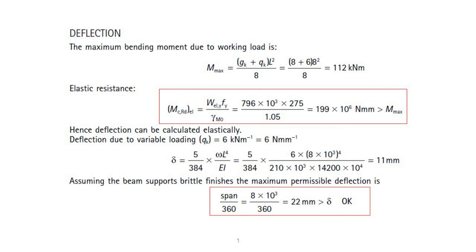Now, referring to our previous example, we can then start to check the maximum permissible deflection for our beam. First, we need to ensure the maximum unfactored design bending moment is lesser than the elastic bending resistance Mc,Rd elastic, which in our case is satisfied. Finally, by inserting the required values into the equation, we can confirm that our designed beam has satisfied the permissible deflection required, as shown here.